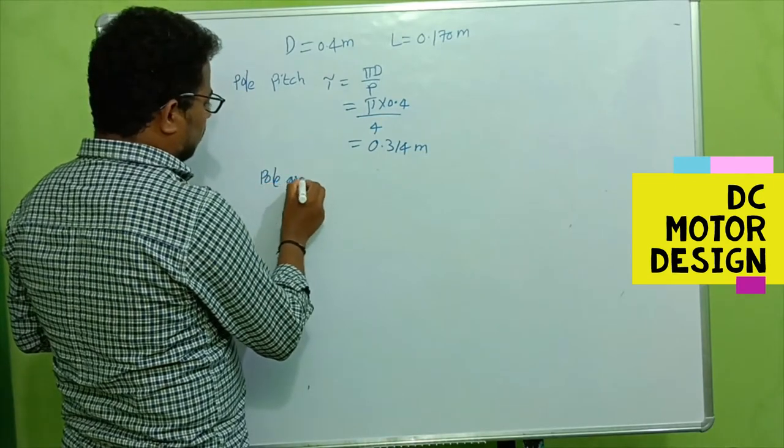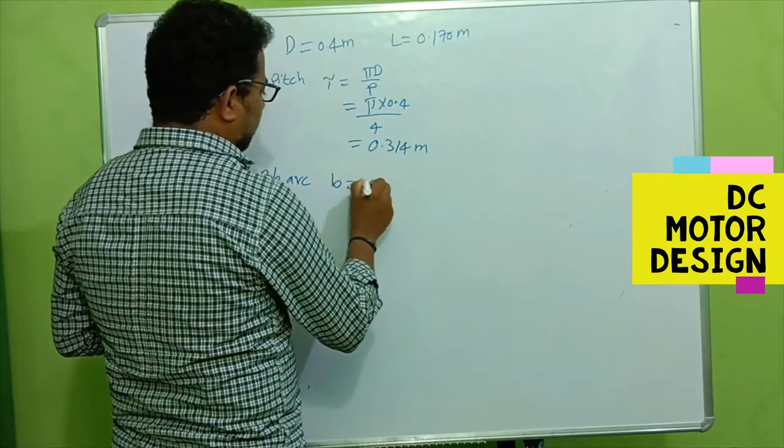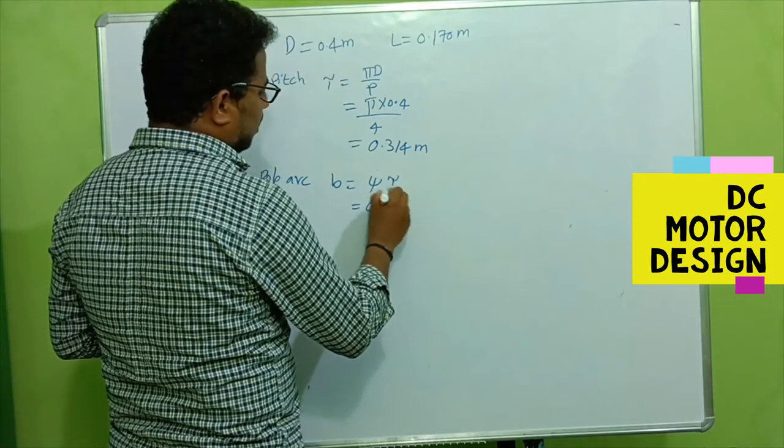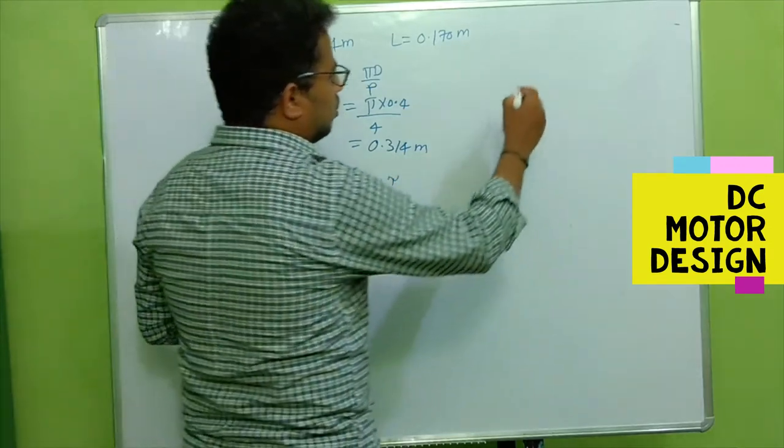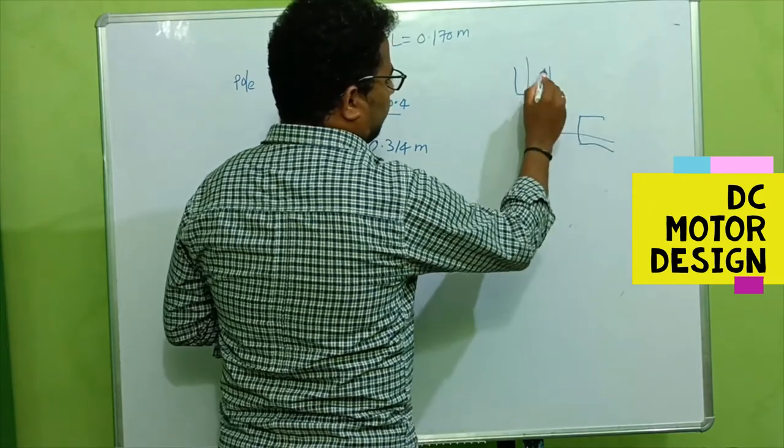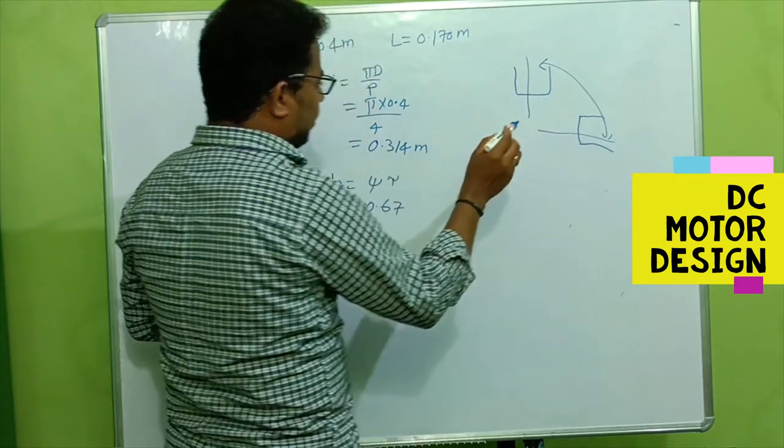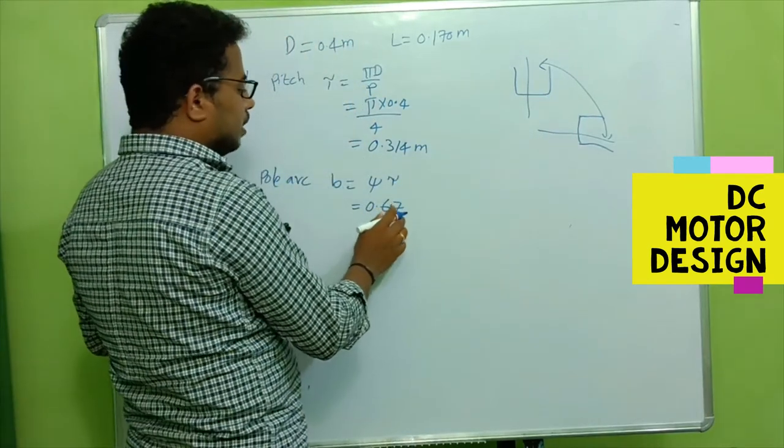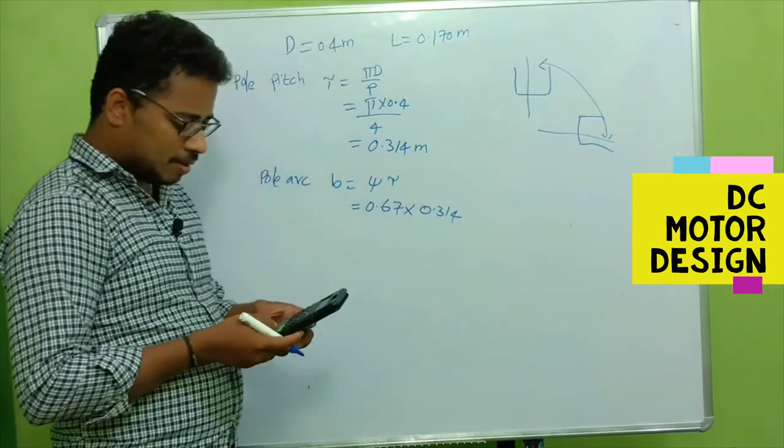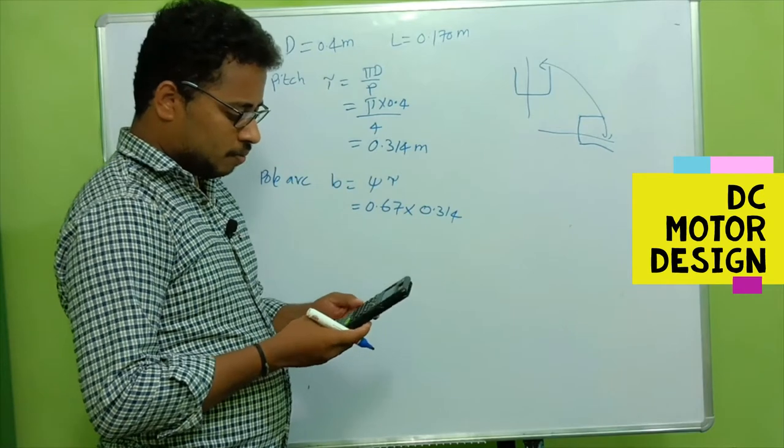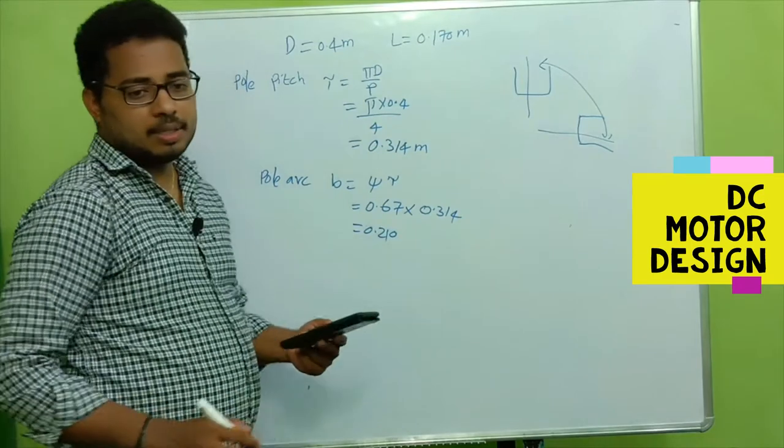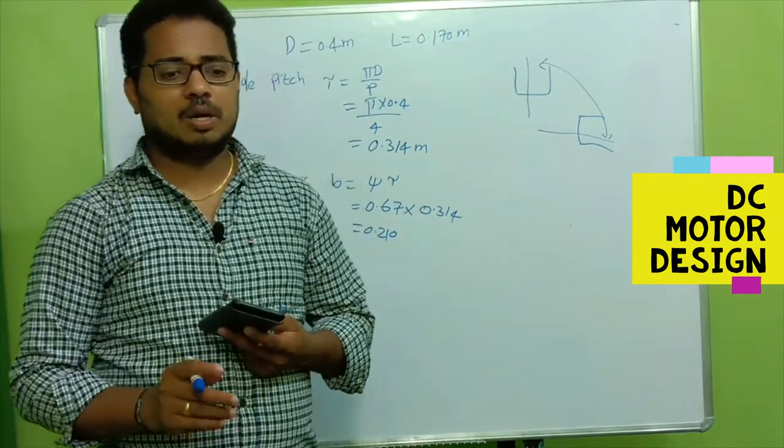Now, what is the pole arc? Pole arc, denoted as b, is ζ (zeta) times τ. Zeta is the ratio, generally we take 67 percent. So if this is one pole and this is another pole, then this is the pole arc. 67 percent is occupied by the pole arc. This is 0.7 times 0.314, which gives us 0.210. So 210 mm is the pole arc.